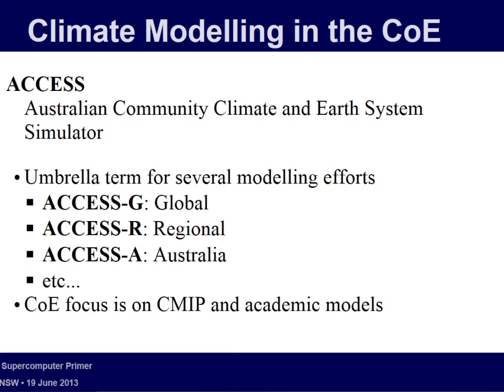I'll wrap up by giving an overview of what's going on in the center. The main umbrella term for climate modeling in Australia is ACCESS. ACCESS is quite broad — it covers just about every single modeling effort at CSIRO, the Met Bureau, and others. There's ACCESS-G, ACCESS-R, ACCESS-A, ACCESS-T for tropical, ACCESS-C for cities. But in the center, the ones of interest are really ACCESS-CM and ACCESS-OM.